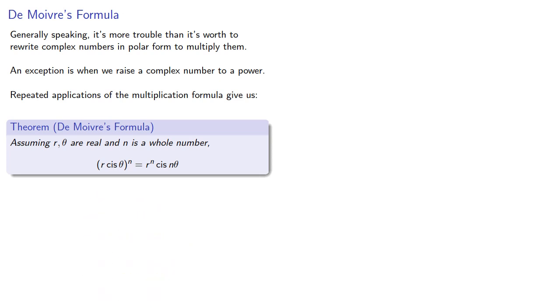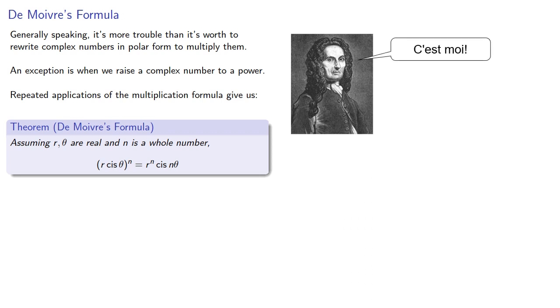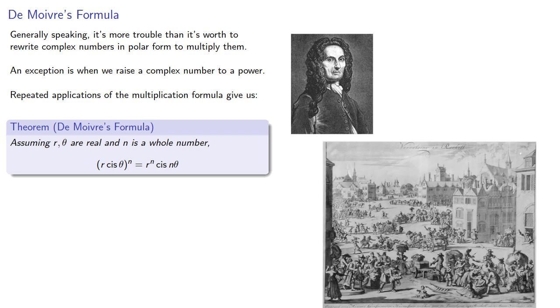And this is known as De Moivre's formula, and with a name like De Moivre, you'd think that the mathematician was French. But in 1685, the government, under the influence of religious radicals, revoked a century-long policy of toleration, and De Moivre, along with many of his fellow co-religionists, fled to England.